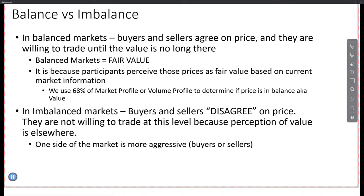When you have an imbalanced market, buyers and sellers are not in agreement. They disagree, and wherever the price is going, that's the aggression. If you see a lot of orders executing on the ask and price is going higher, and delta is positive — ask minus bid — that means one side is more aggressive. In that case, it would be the buyers.